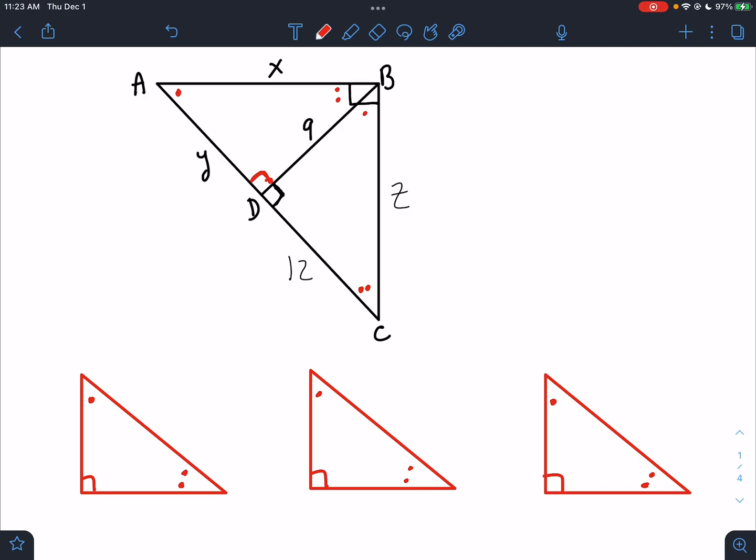Once we've done that, we can then go to each triangle. I'm going to focus on the big triangle, ABC. So if I'm looking at ABC, the one dot is A, the 90 is B, and the two dot is C. How long are those sides? A to B is X, right? A to B is X. B to C is Z. And A to C, the whole thing from A to C is Y plus 12.